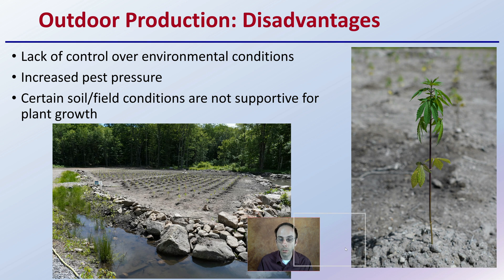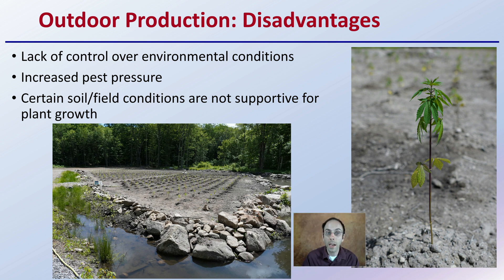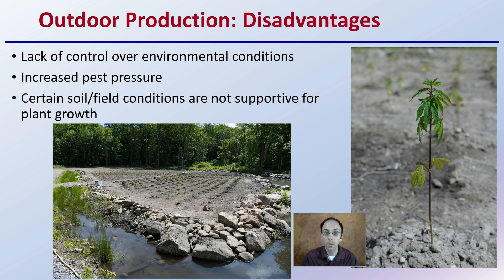There are also some disadvantages to growing outdoors. There's a lack of control over environmental conditions — it could be too much water, too little rain, too much sun, or different soil types. There's also increased pest pressure from insects, and larger pests like deer can also impact the area. Certain soil or field conditions are not supportive for plant growth, so you want to take a soil test to make sure you're not putting plants in an area where they may look good initially but won't come to full term at harvest.